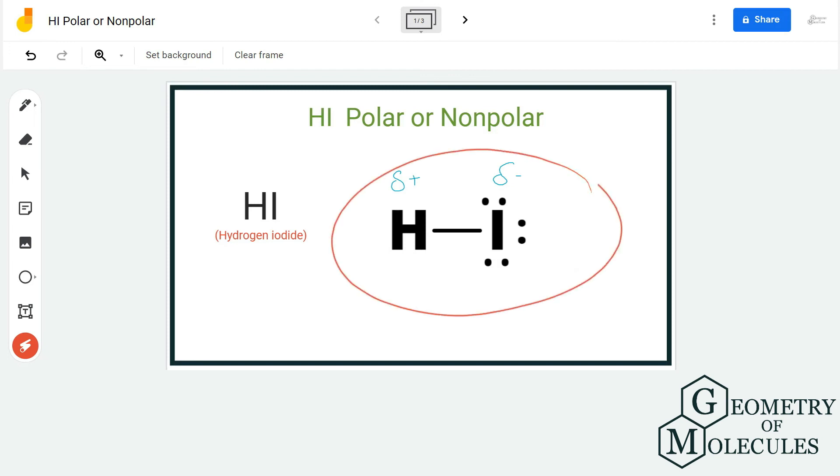So as there are uneven distribution of charges and formation of poles in this molecule, hydrogen iodide is a polar molecule.